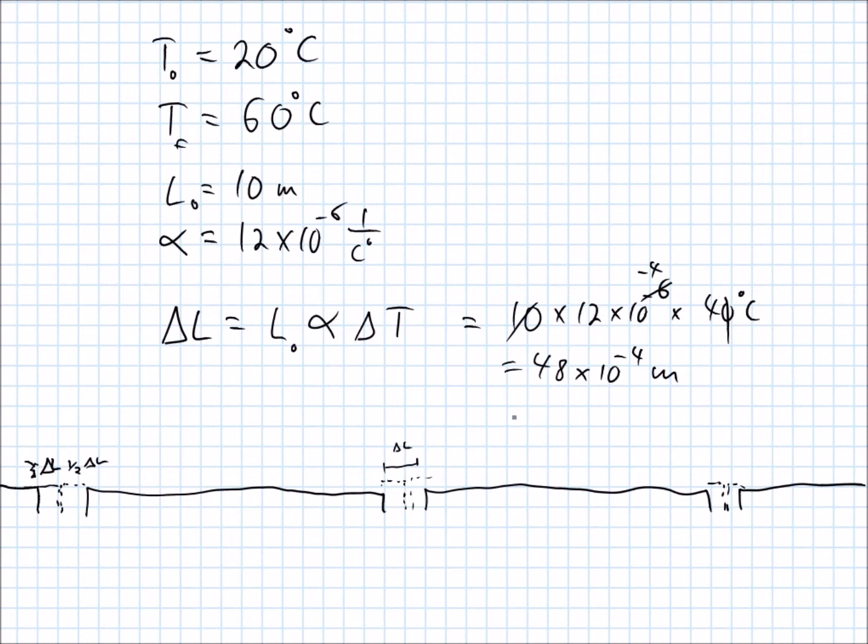Or, let's see, what can we write this in a different way? 4.8 times 10 to the negative 3rd meters, which is 4.8 millimeters.